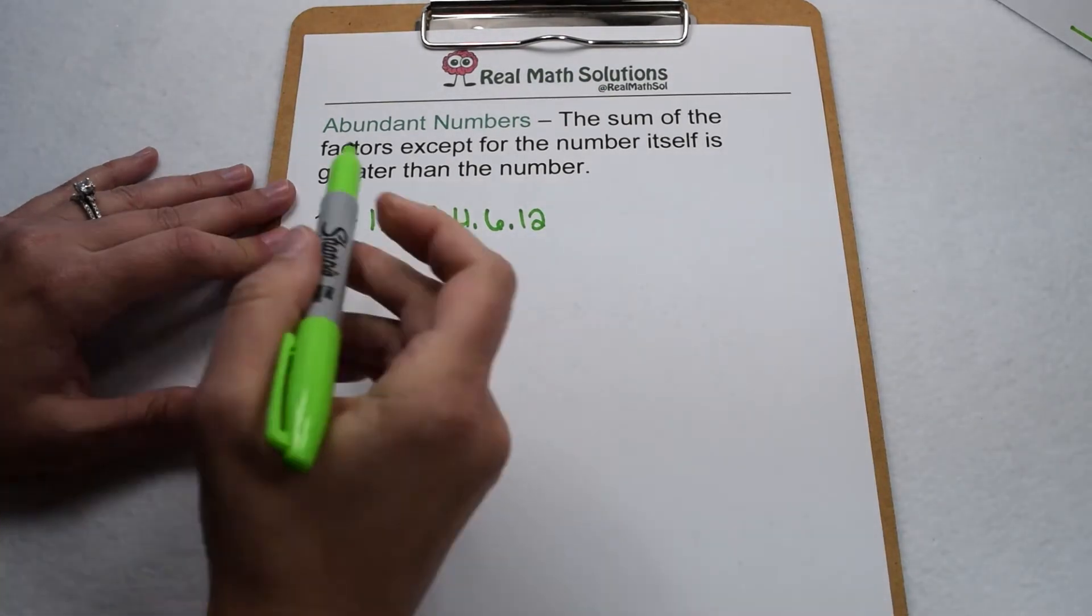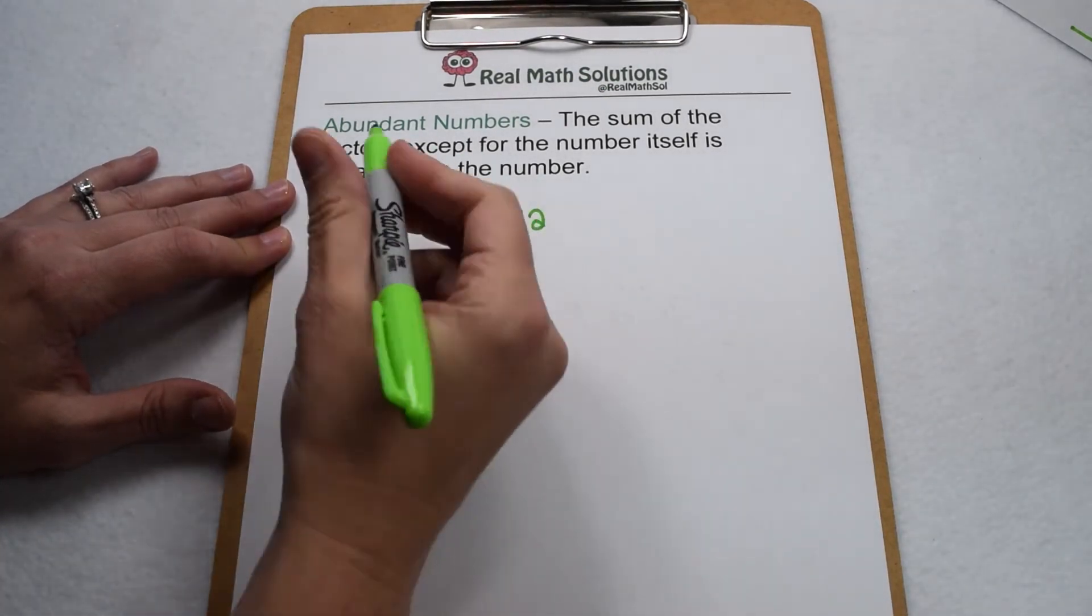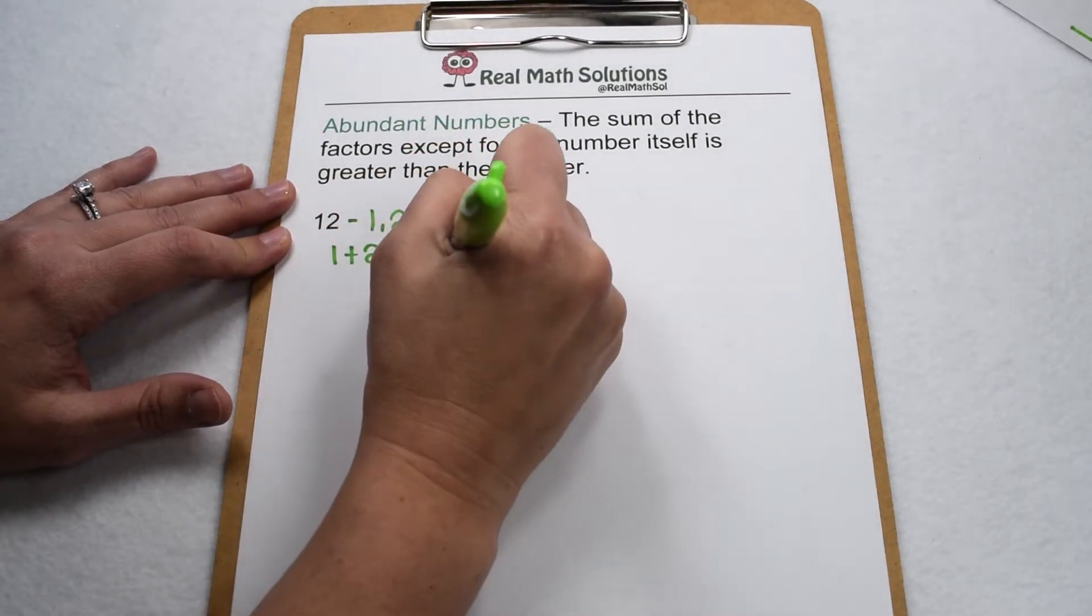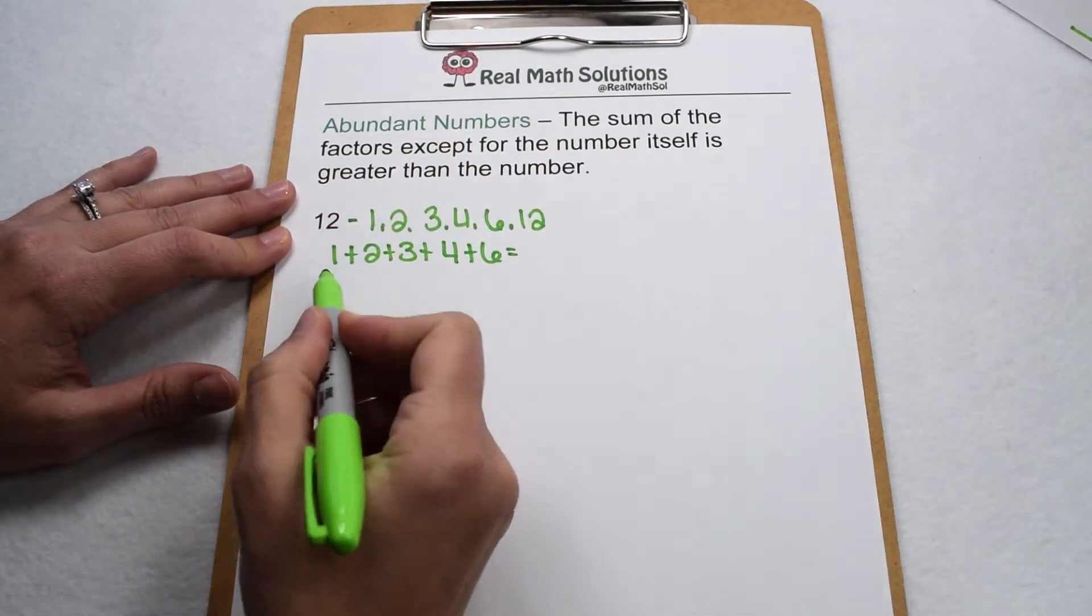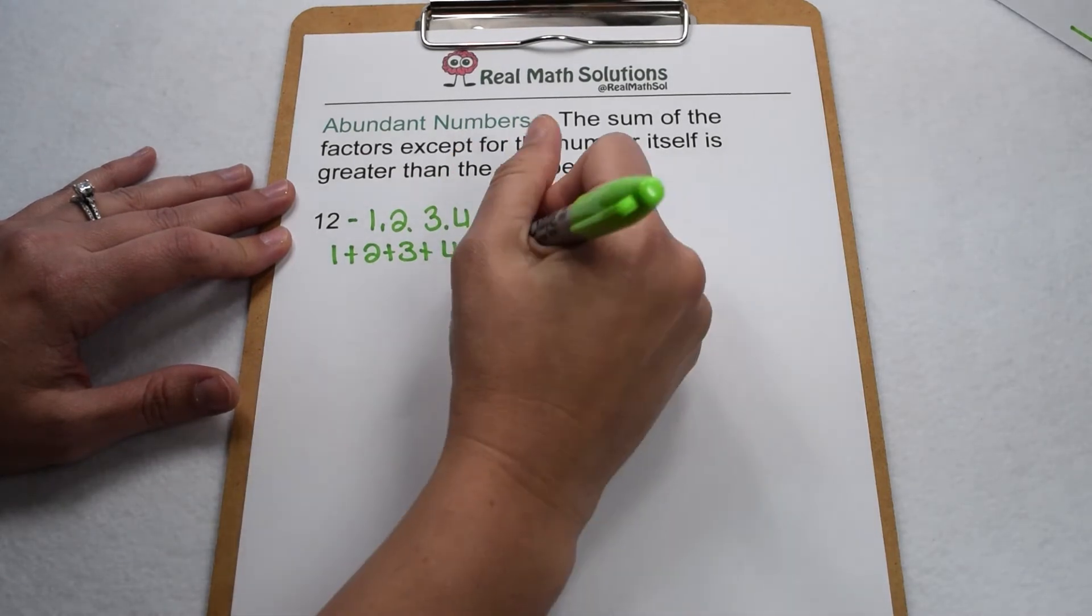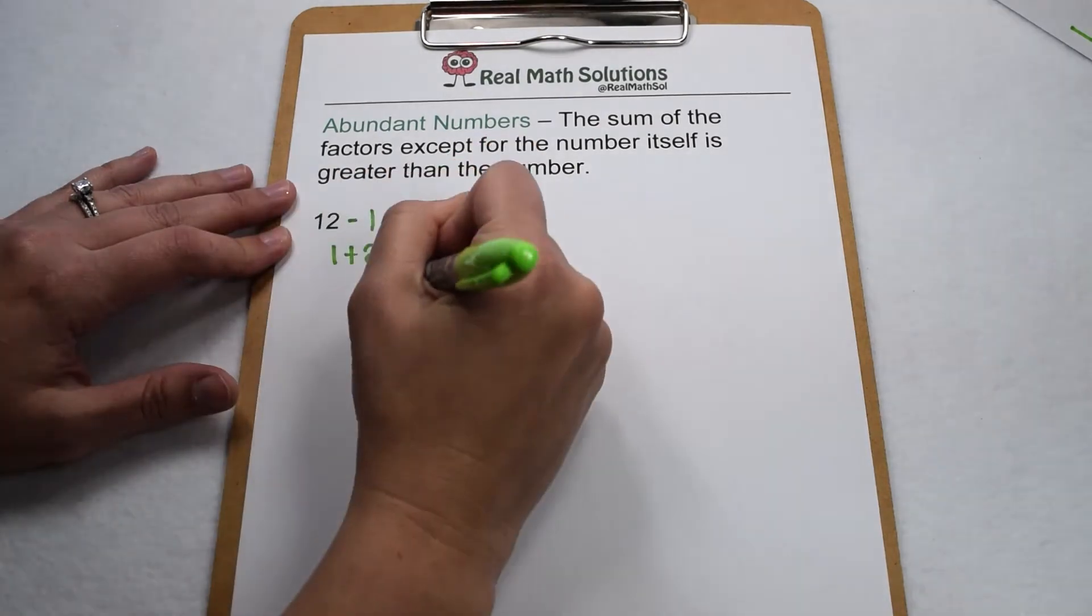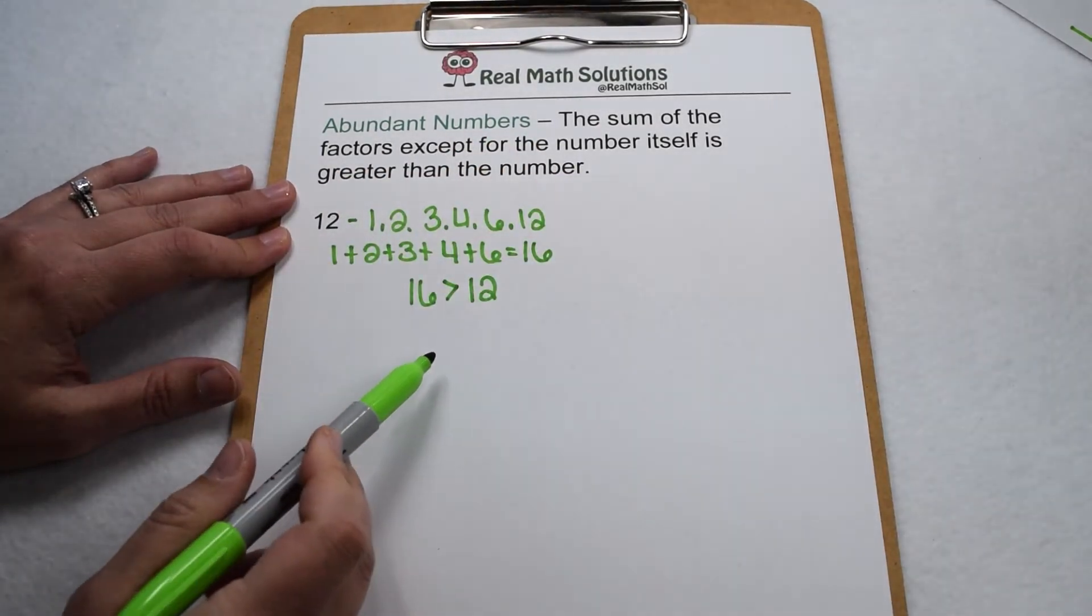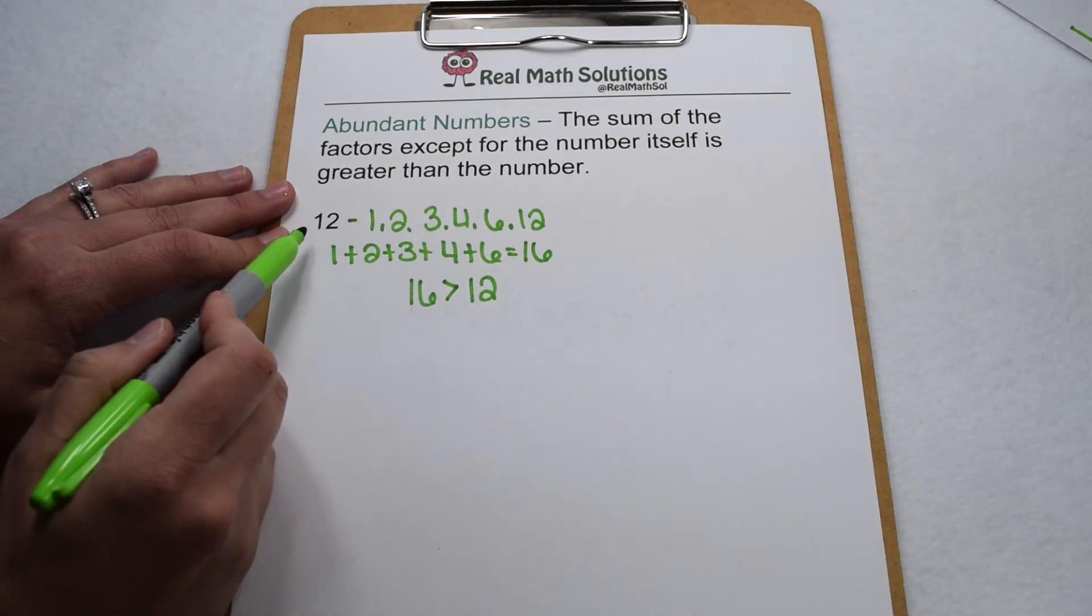To test if it's abundant, we would then add together all of the factors except the 12. So 1 plus 2 plus 3 plus 4 plus 6. When we do that, 1 plus 2 is 3. 3 plus 3 is 6. 6 plus 4 is 10. 10 plus 6 is 16. When we compare 16 to 12, 16 is definitely greater than 12. So 12 is an abundant number.